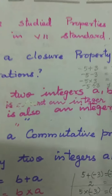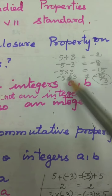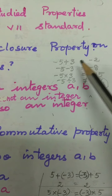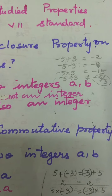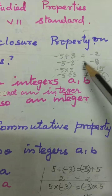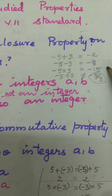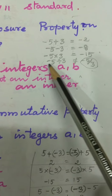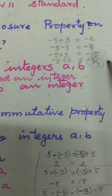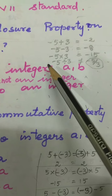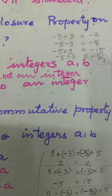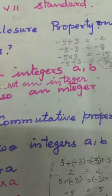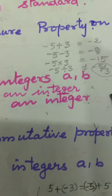We shall see some examples. Minus 5 plus 3 is equal to minus 2. Minus 5 minus 3 is equal to minus 8. Then minus 5 into 3 is equal to minus 15. Minus 5 divided by 3 is equal to minus 5 by 3, so it is not an integer.